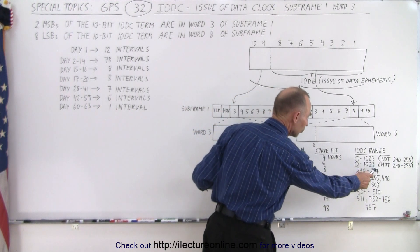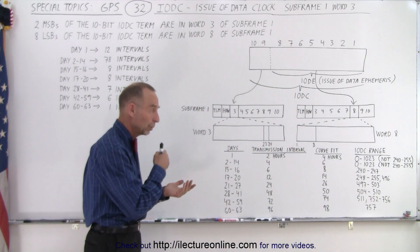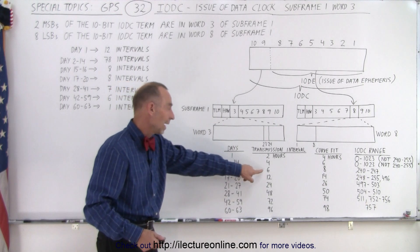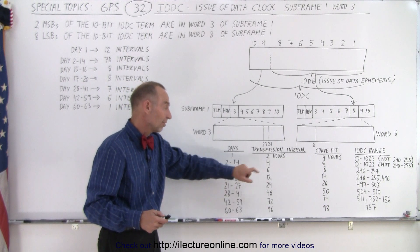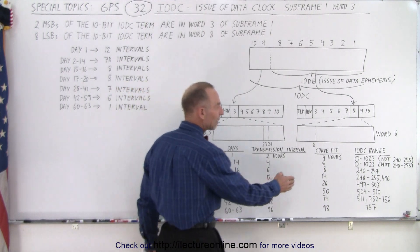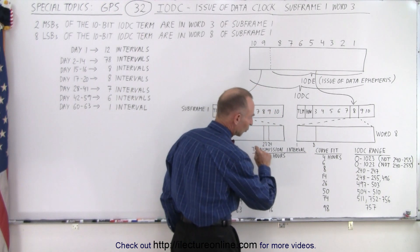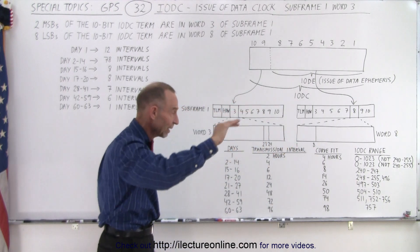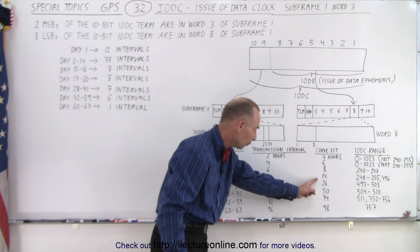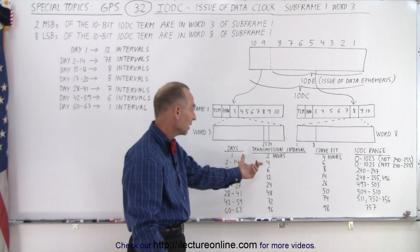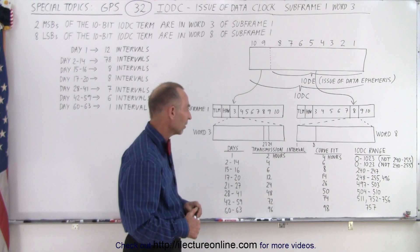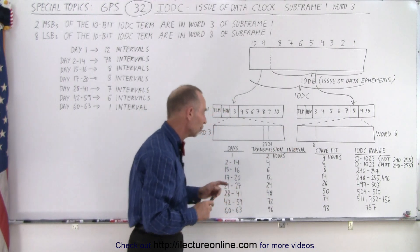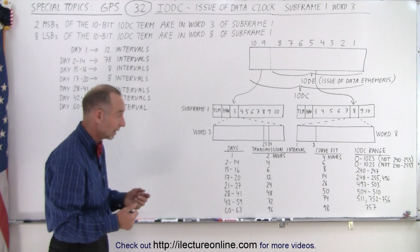So when the IODC is equivalent to a number between 240 and 247, you're indicating to the receiver that you're now in day 15, 16, and that the transmission interval is now 6 hours per data set. Also notice here we have the curve fit hours, which means if you want to curve fit beyond the given data set, you can go on for another 2 hours by curve fitting the information for an additional 2 hours. Notice all the curve fit hours are 2 hours more than the transmission interval of the particular SV data. So that means with doing extrapolation or curve fitting, you can add another 2 hours of usefulness out of the data before you jump to the next set, in case we have to.